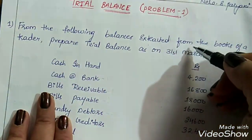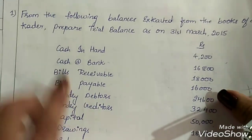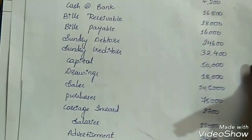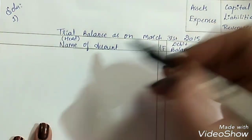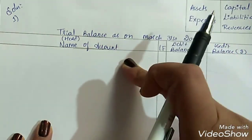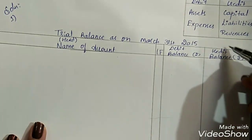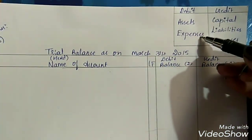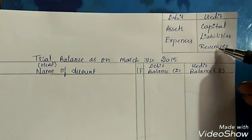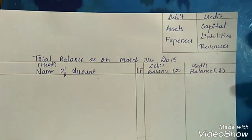From the following balances extracted from the books of a trader, prepare trial balance as on 31st March 2015. We just need to mention the closing balances of all the ledger accounts in the trial balance, and mention the amount in the debit or credit amount columns. This is the format of a trial balance — we need to write the heading first. Then there is the particulars column, also known as head or name of the account, the ledger folio column, debit balances, debit amount column, and credit amount column. Assets and expenses need to be recorded on the debit side, and capital, liabilities, and revenues need to be recorded on the credit side.